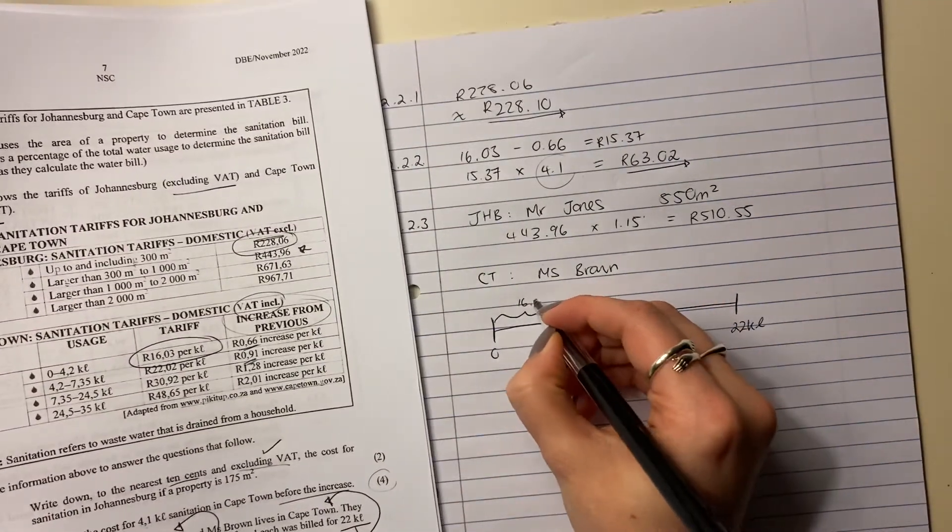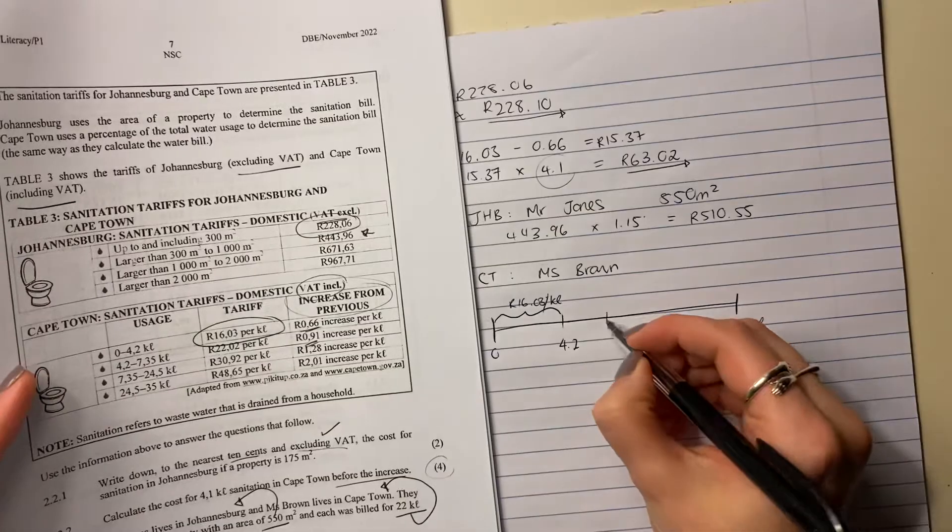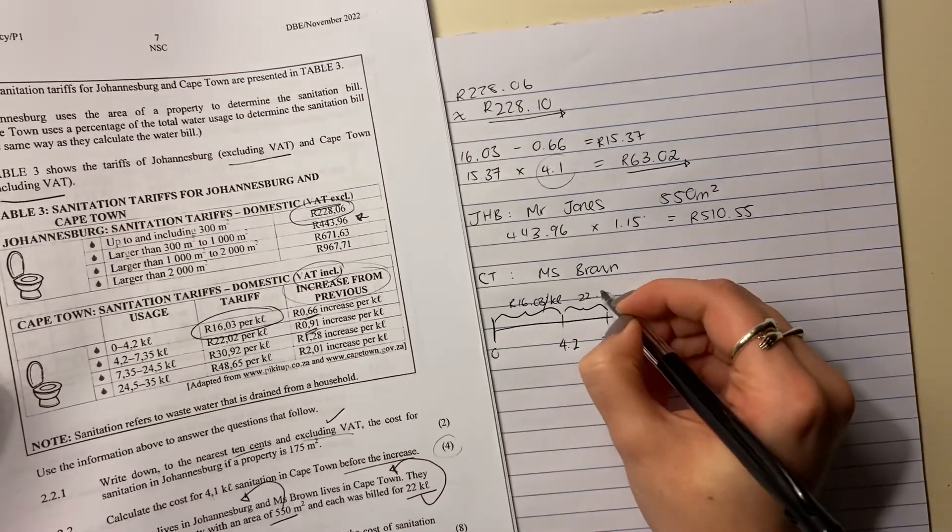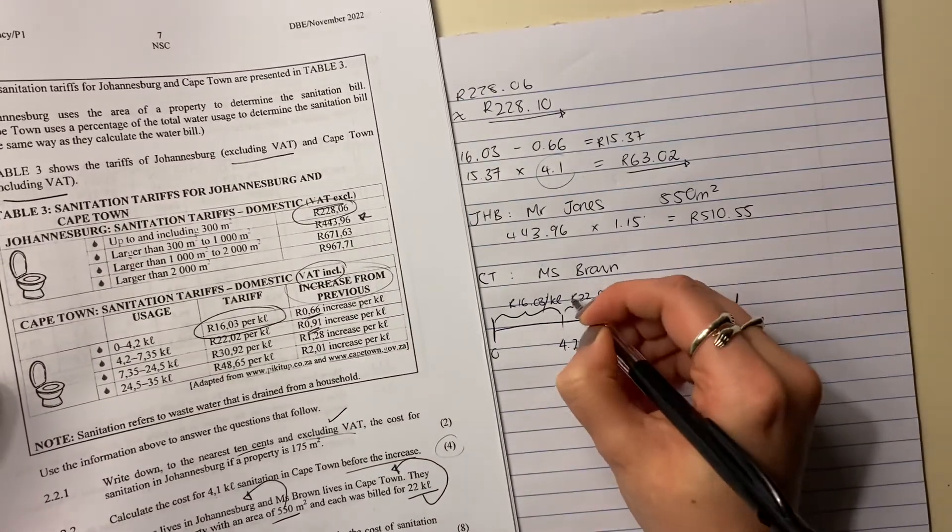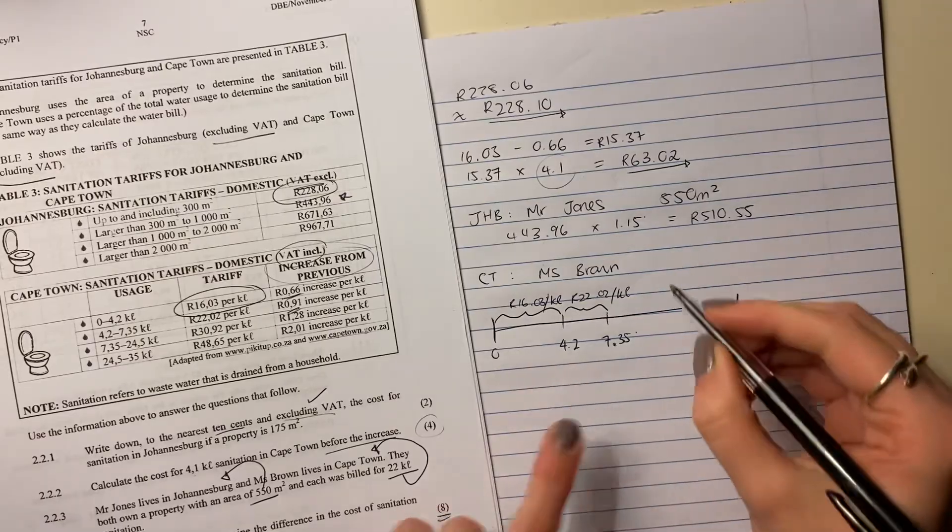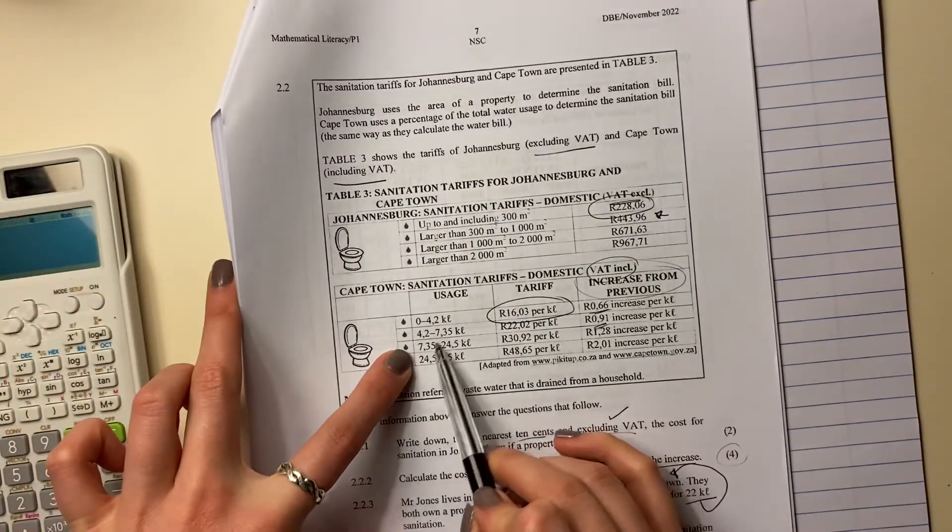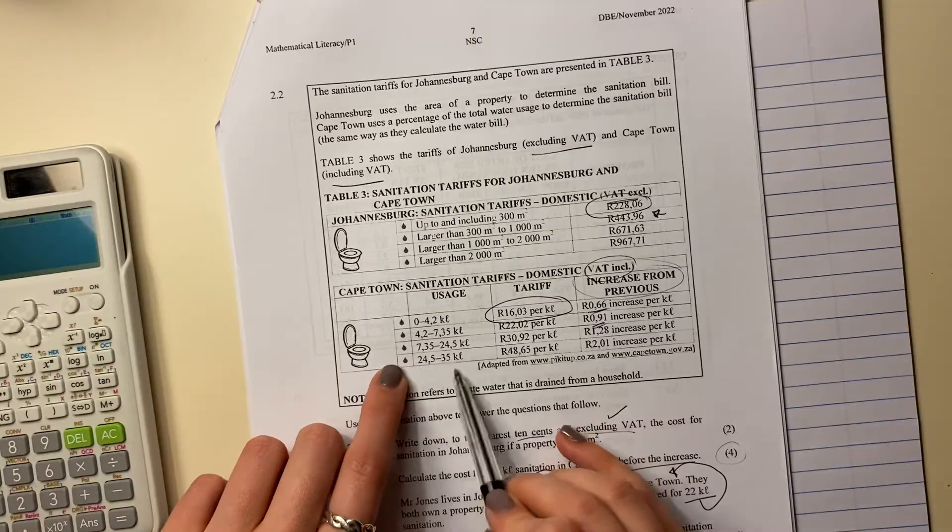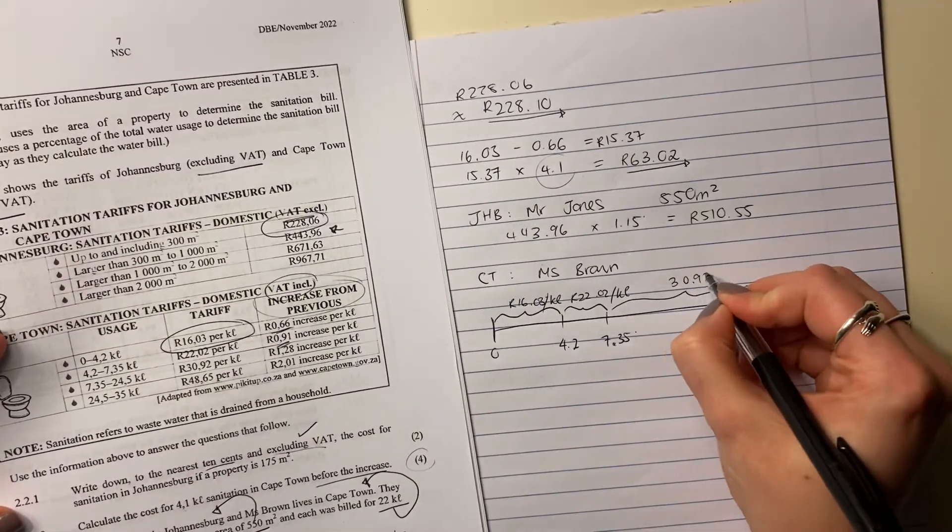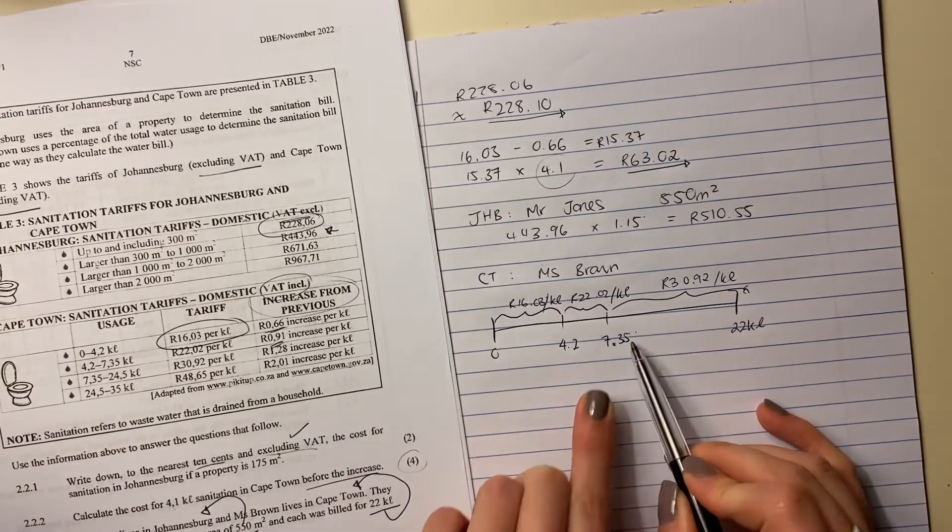Now, for the first 4.2, Ms. Jones is going to be charged 16.03 per kiloliter. Then between 4.2 and 7.35, she's going to be charged 22.02 per kiloliter. So do you see that this 22.02 is not for the whole thing. It's just for the kiloliters in between these two amounts. Then the last little portion here, because 22 is less than that, we know that we're not going to go into the third interval. This is the last payment bracket we're looking at.